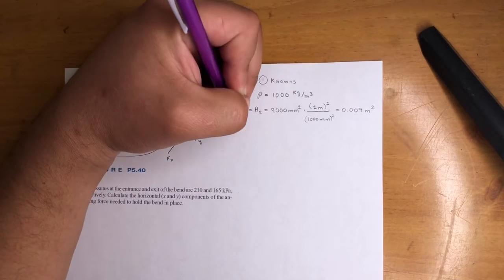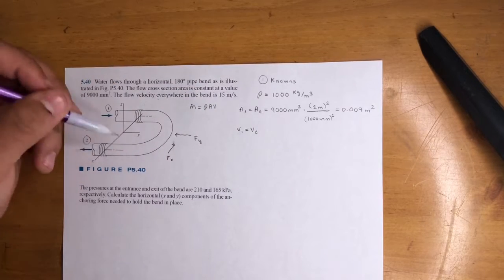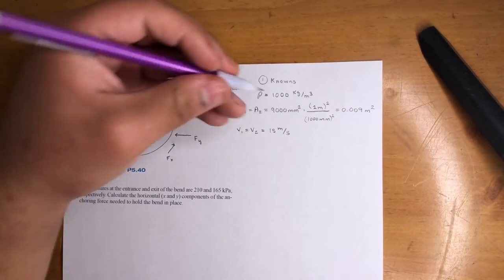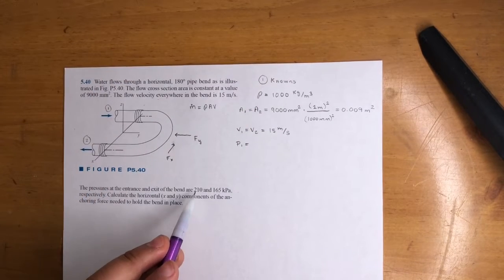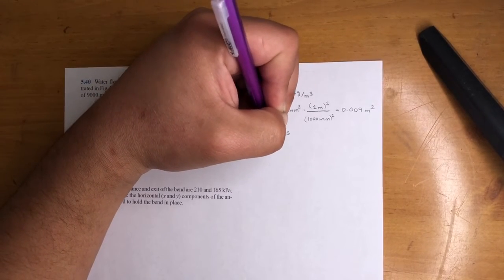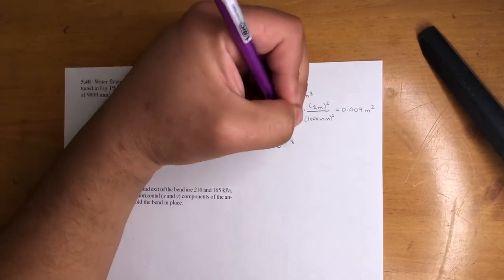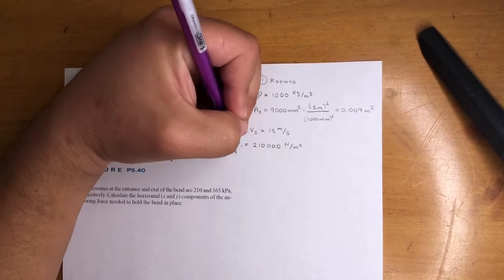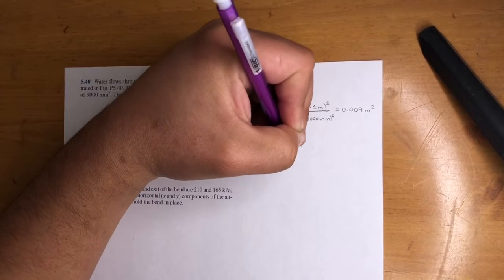They give us velocity, so V1 is equal to V2. It says the flow velocity everywhere, so that's equal to 15 meters per second. They give us the pressures. Pressure 1 at entrance is 210, exit is 165. So pressure 1 is 210,000 newtons per meters squared, just pascals, not kilopascals. P2 is 165,000 newtons per meters squared.